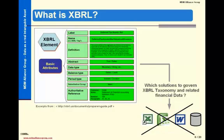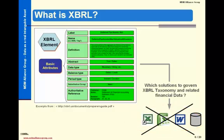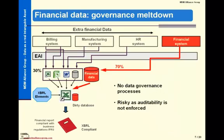Obviously, if taxonomies are governed with poor data management tools, such as spreadsheets or rigid databases, the governance will be quickly questioned as concerns are raised, such as version management, rights management, auditability, and so on. Therefore, the question we have to tackle is how to manage financial data synchronization on XBRL taxonomy to fully govern the financial reporting process.